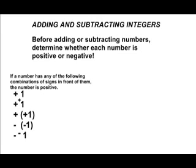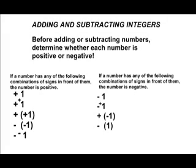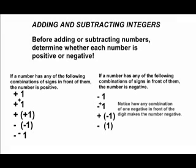If it is a positive number, there will simply be either a plus in front of it or plus a positive. Also, if you see minus a negative in front of that number, or two consecutive negatives or minuses, then that number is also positive. Now, if the number is negative, you will simply see a single minus sign in front of that number, or you will see plus a negative in front of that number. That is how you will know whether or not each number is positive or negative.